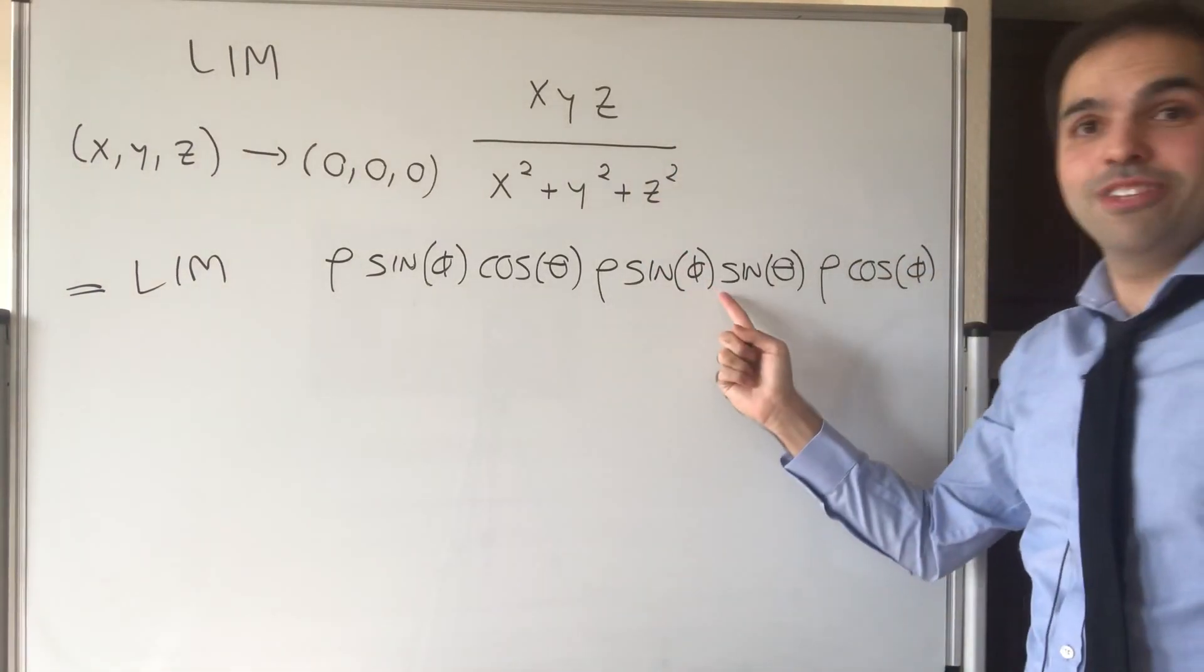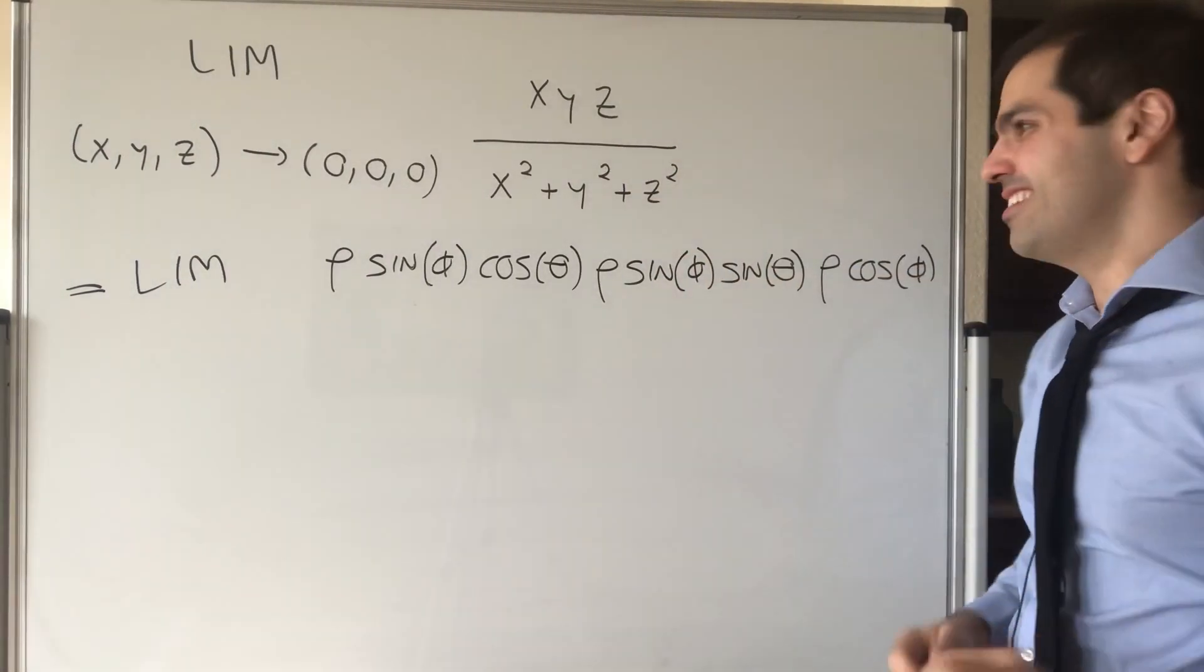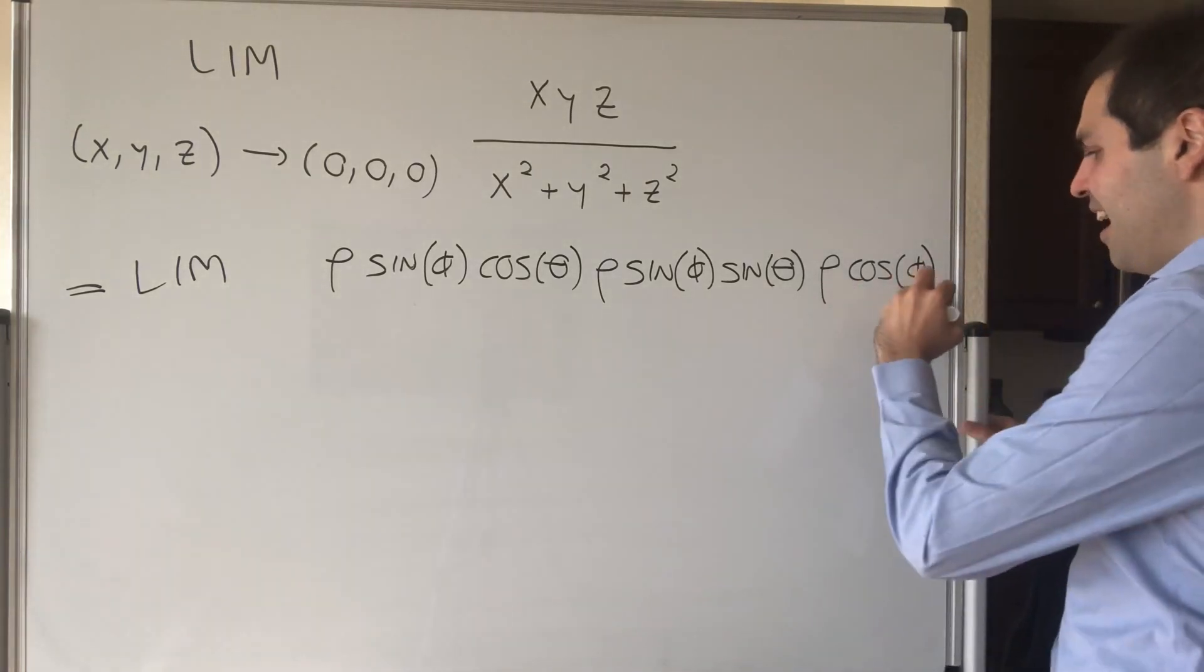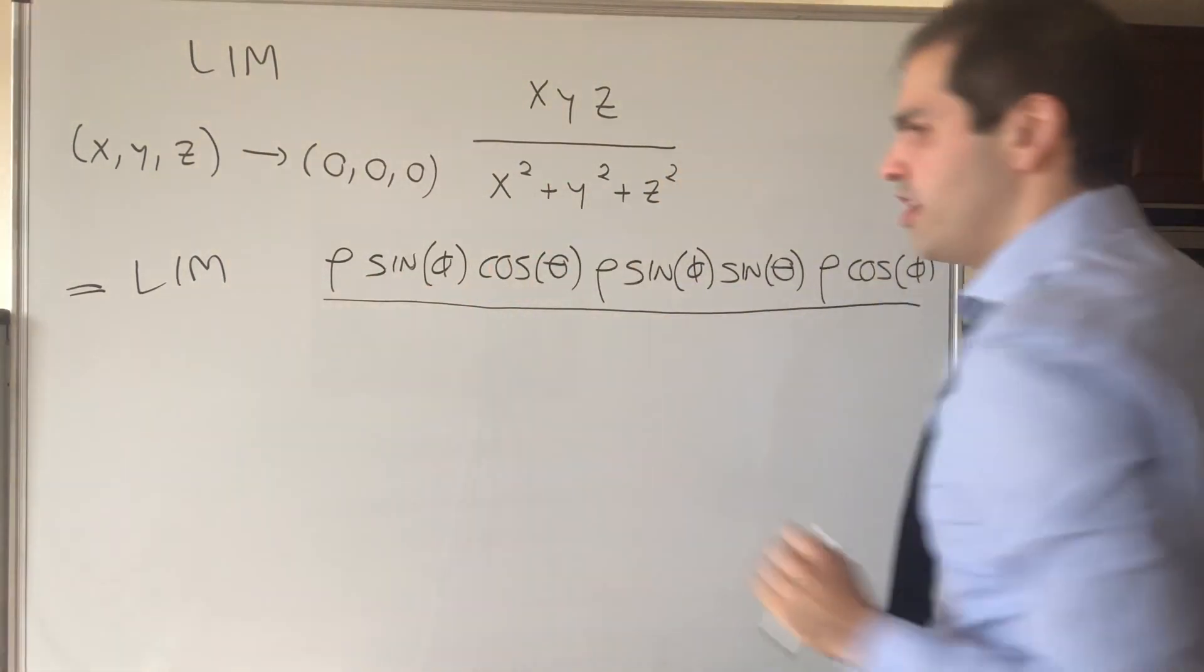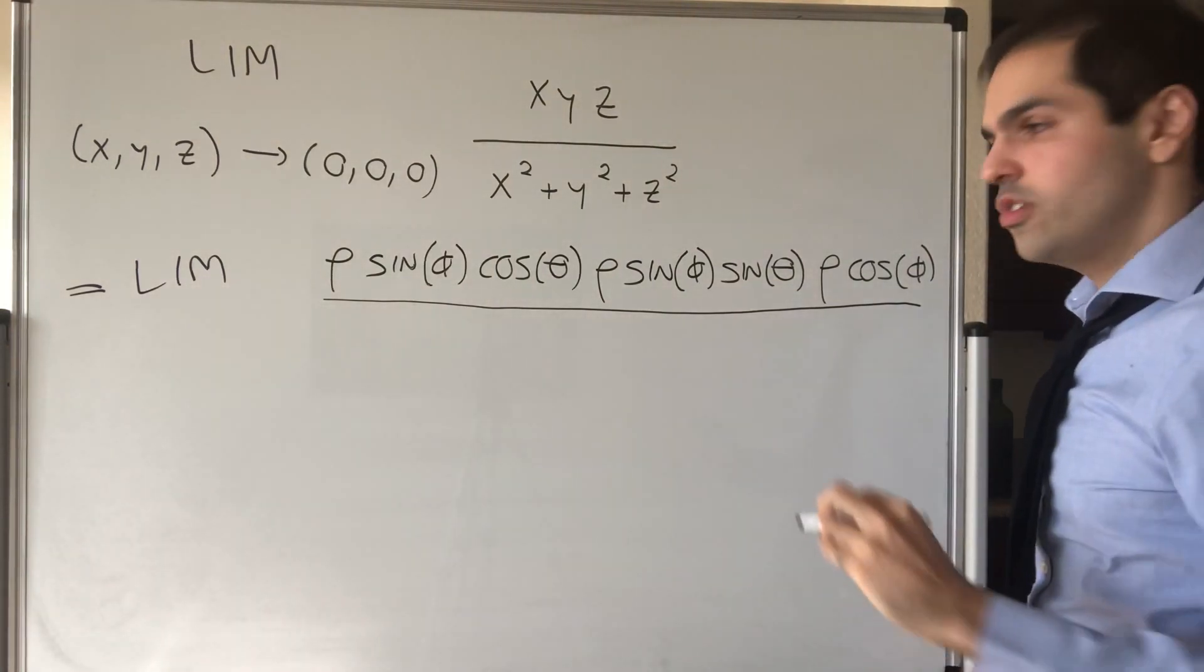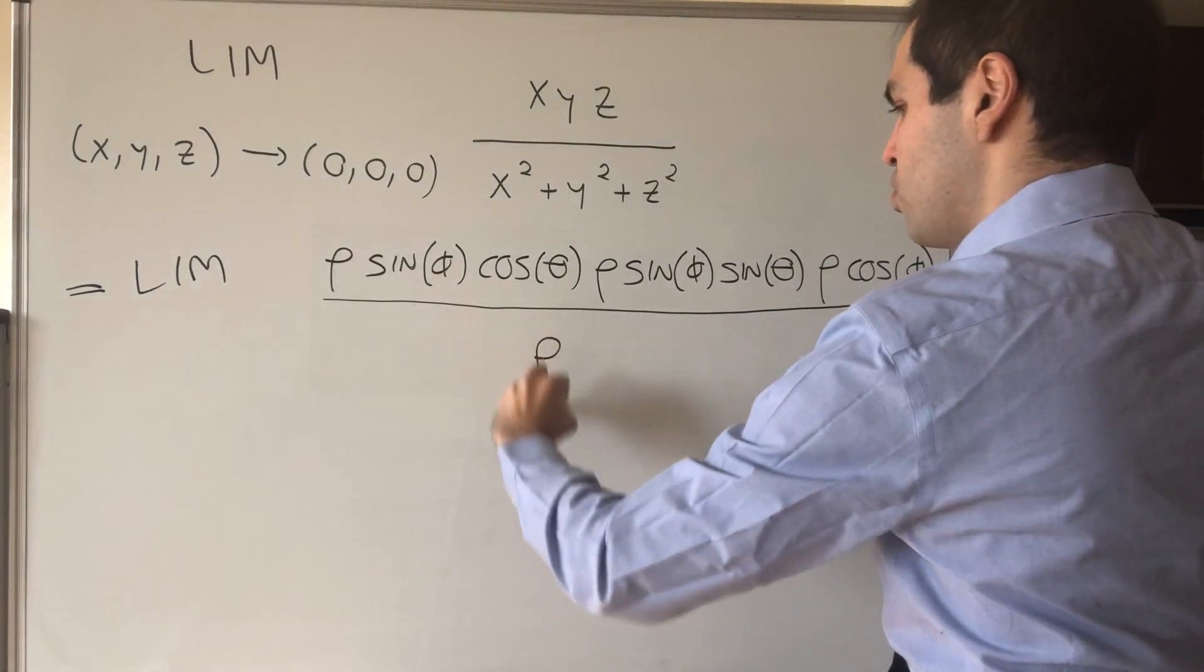Look, this is actually much harder than the above, but you'll see it simplifies. And lastly, what is X squared plus Y squared plus Z squared? Well, it's the distance squared to the origin, so it's just rho squared.